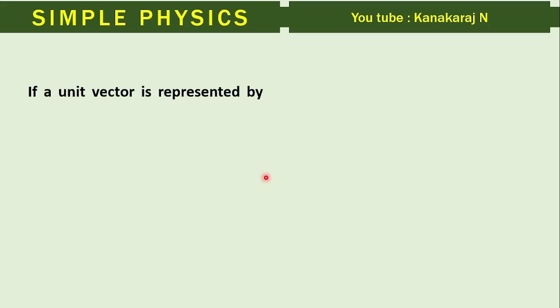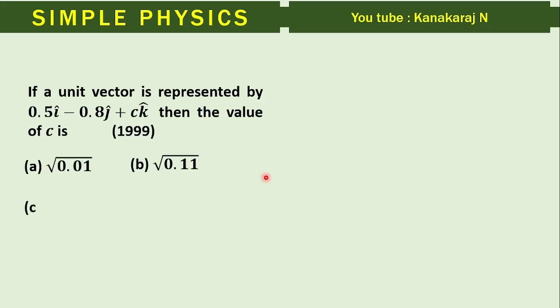If a unit vector is represented by 0.5 i cap minus 0.8 j cap plus c k cap, then the value of c is. Four options are here.